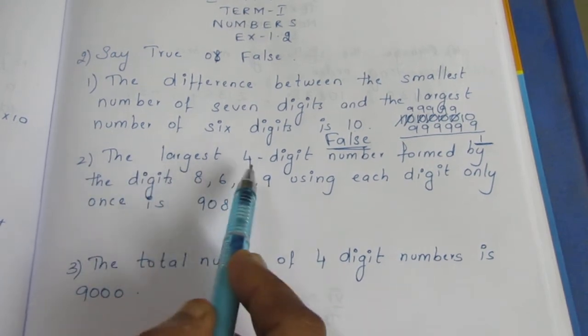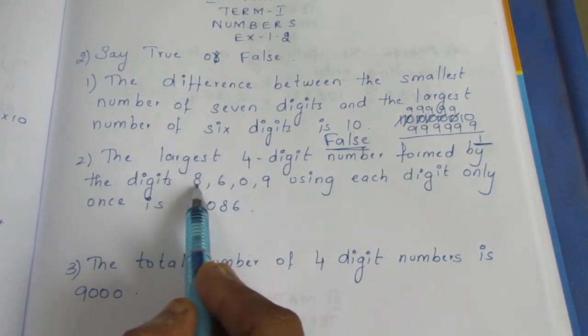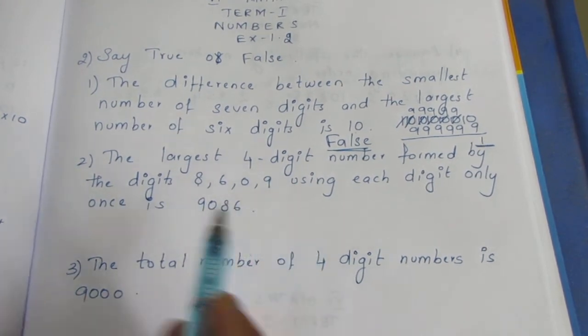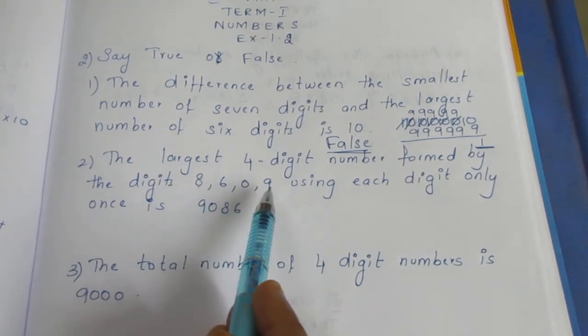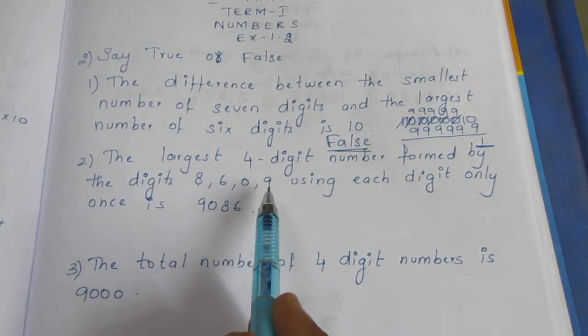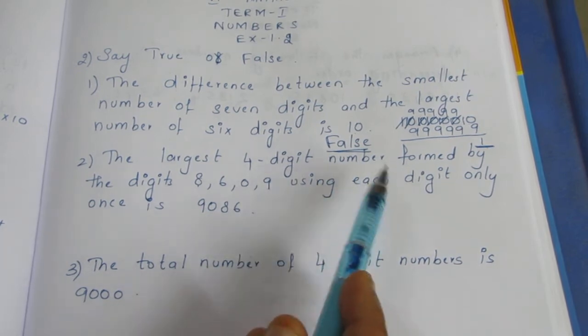Second problem: the largest 4-digit number formed by the digits 8, 6, 0, 9, using each digit only once. What is the largest number?